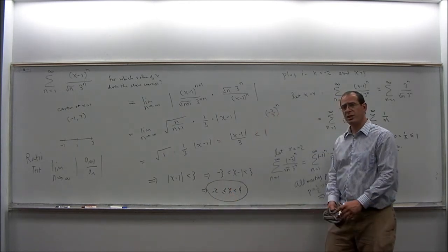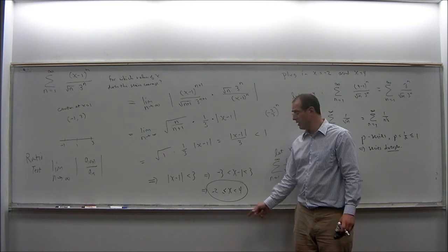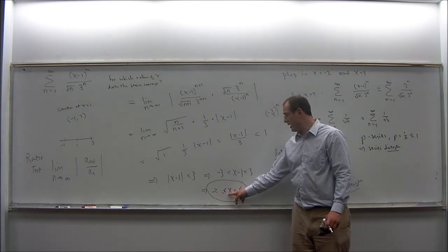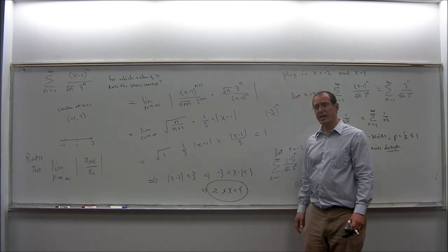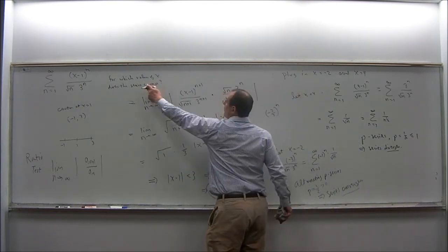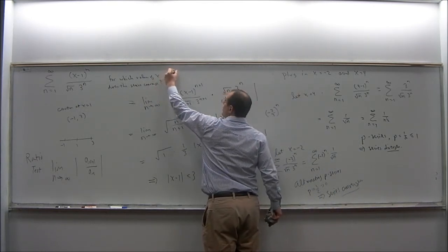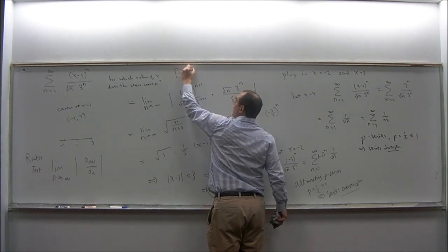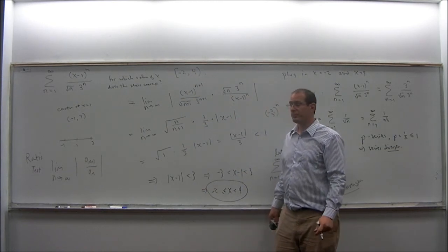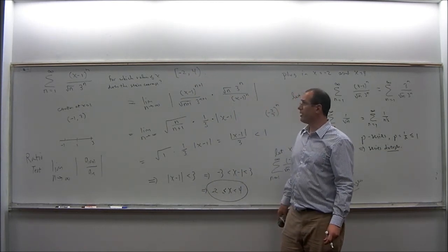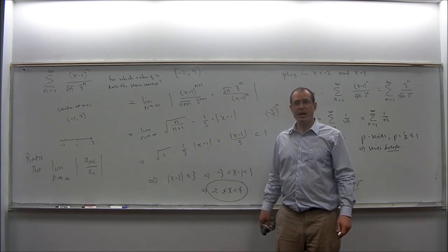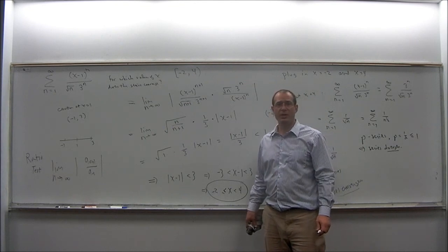So the interval of convergence is the interval still centered at 1 with radius 3, including the left endpoint: x should be greater than or equal to negative 2 and strictly less than 4. In interval notation, the interval of convergence is from negative 2 with a square bracket to 4 with a round bracket. That's an example of finding the interval of convergence of a power series. Thank you for watching — I hope you found this video helpful.